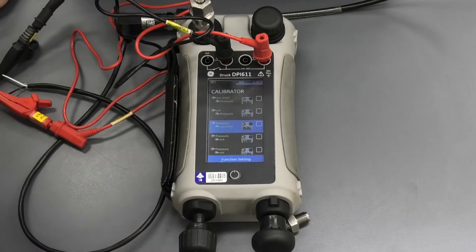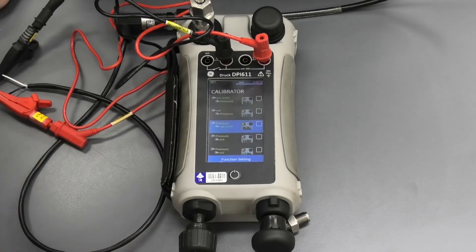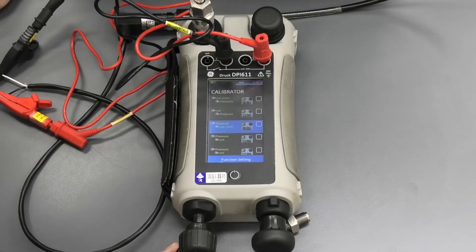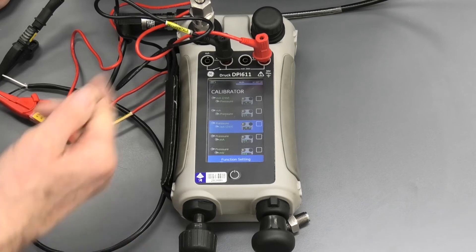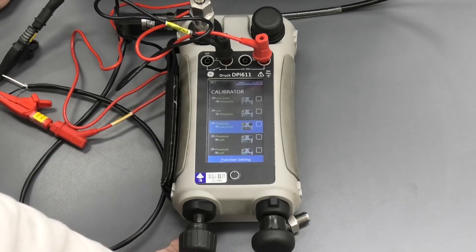So now we've got our 4 to 20 milliamp wired up. So now I need to select this and it throws up this little function setting button and sets itself up internally to do this measurement.